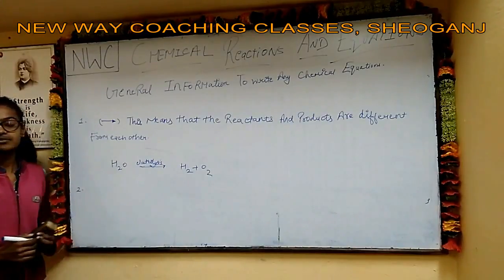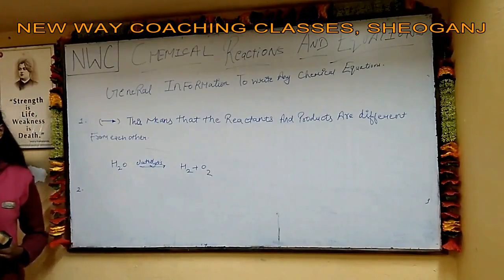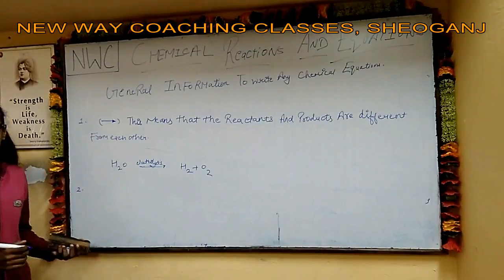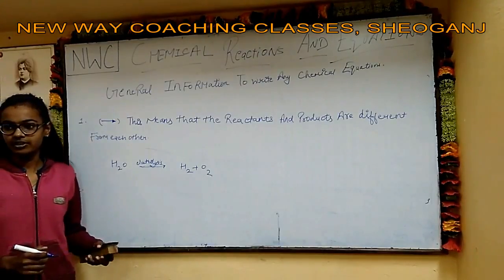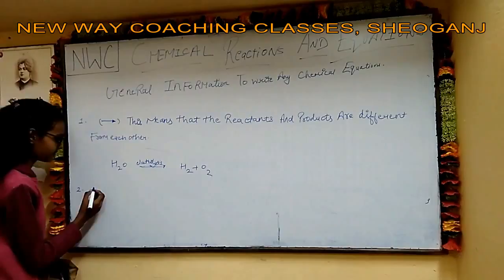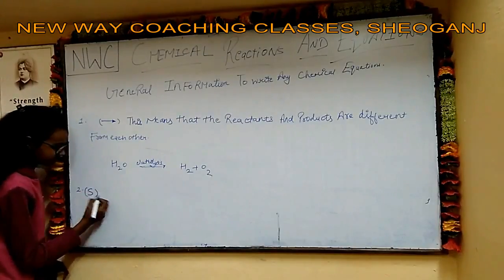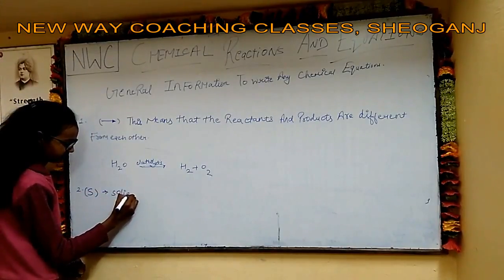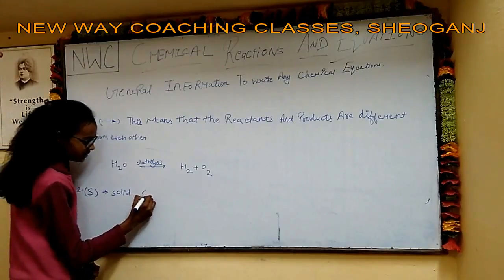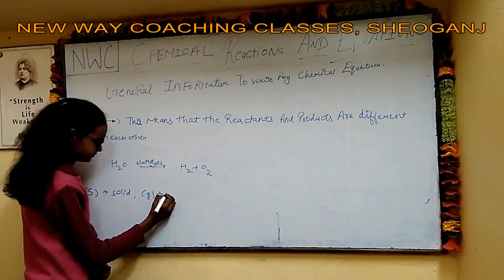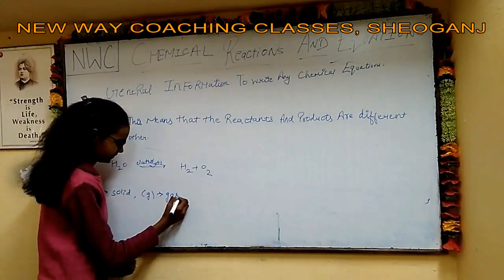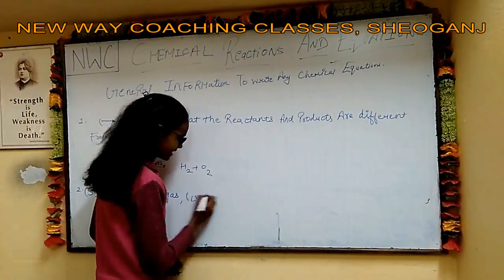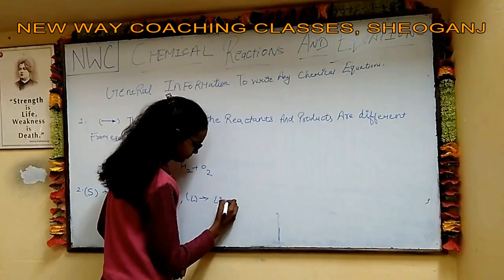Next, there are some symbols like solid, liquid, gas, or aqueous symbols, which indicate that a substance is solid, liquid, gas, or aqueous. For example: S for solid, G for gas, and L for liquid.